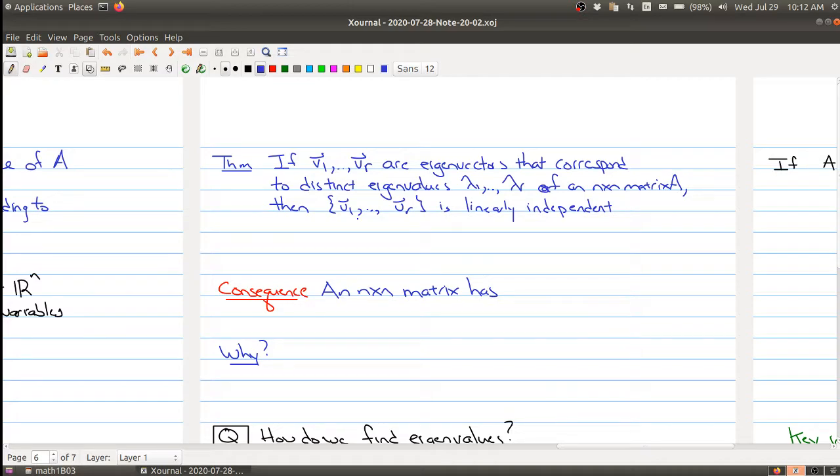And then a nice consequence of this is that an n by n matrix A has at most n distinct eigenvalues. And why is this true? Well, if you had distinct eigenvalues, they would each have their corresponding eigenvectors.